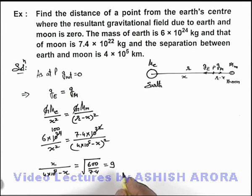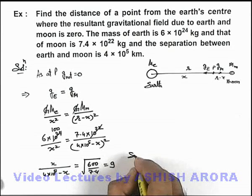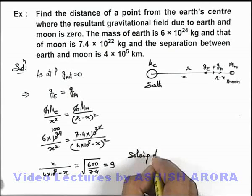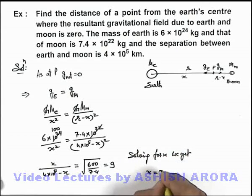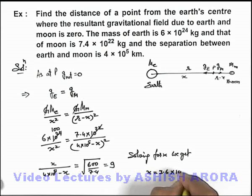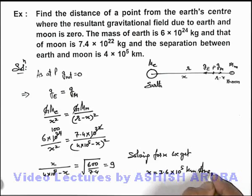And if we solve this expression for x, we can simply write, solving for x we get, the value of x will be 3.6 × 10^5 kilometers. That is the answer of this problem.